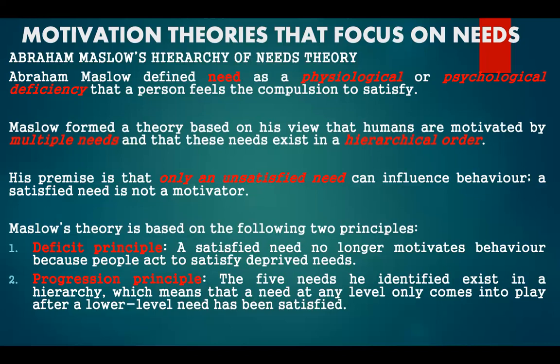Maslow's theory is based on two principles. The first is the deficit principle: a satisfied need no longer motivates behavior because people act to satisfy deprived needs. The second is the progression principle: the five needs he identified exist in a hierarchy, meaning a need at any level only comes into play after a lower-level need has been satisfied.